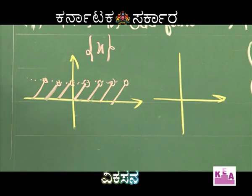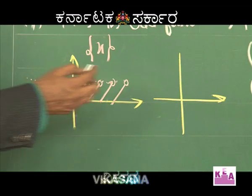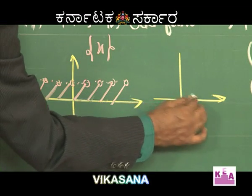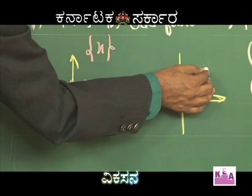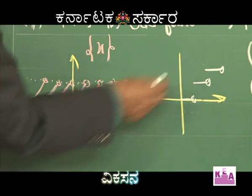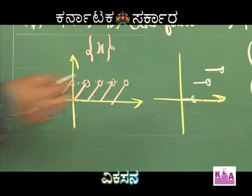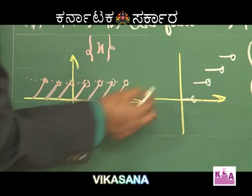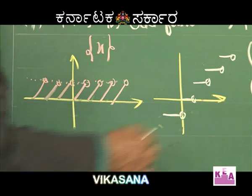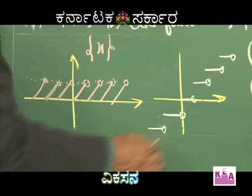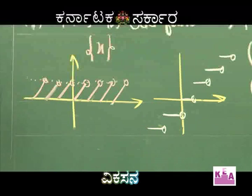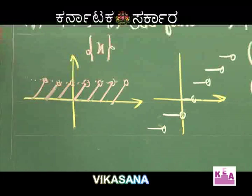For the integral part of x: between 0 and 1 it is 0, between 1 and 2 it is 1, between 2 and 3 it is 2, between 3 and 4 it is 3, between minus 1 and 0 it is minus 1, and between minus 2 and minus 1 it is minus 2.